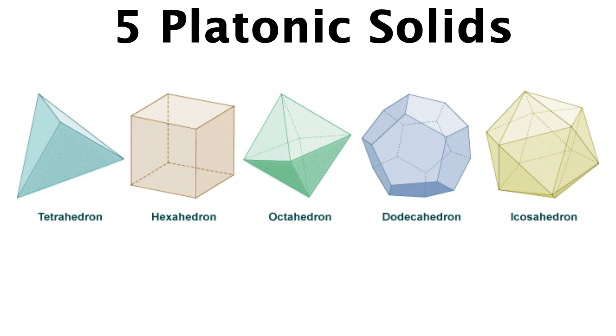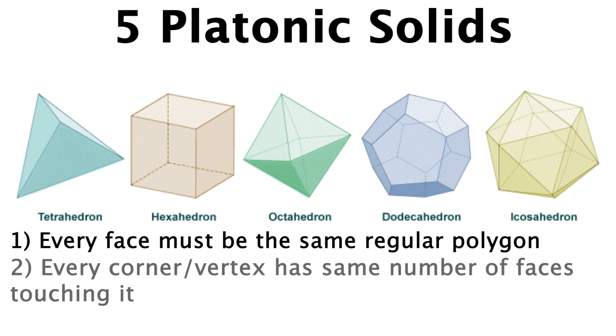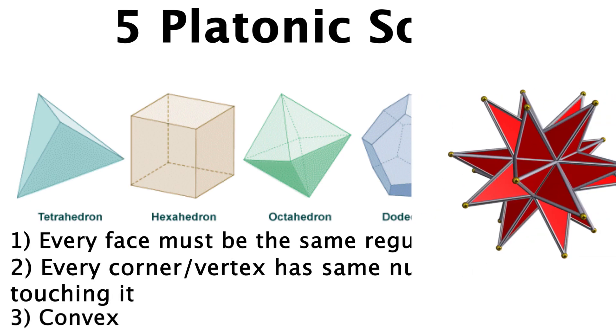Really we're trying to prove there are only five 3D polyhedra such that: one, every face is the same regular polygon; two, every corner has the same number of faces touching it; and three, it's convex so it can't look like this or anything.